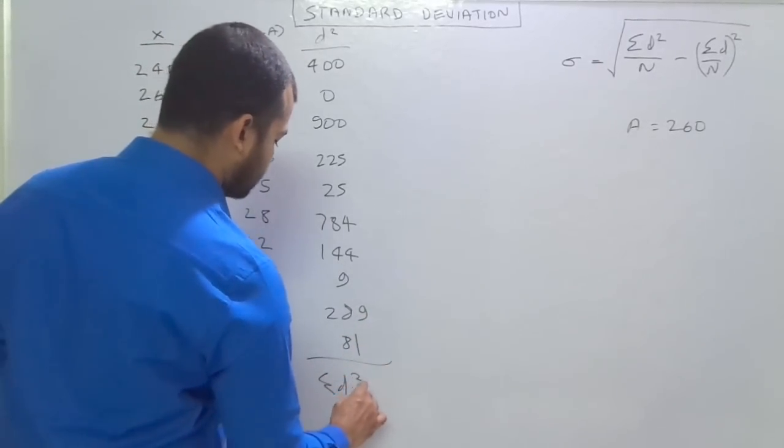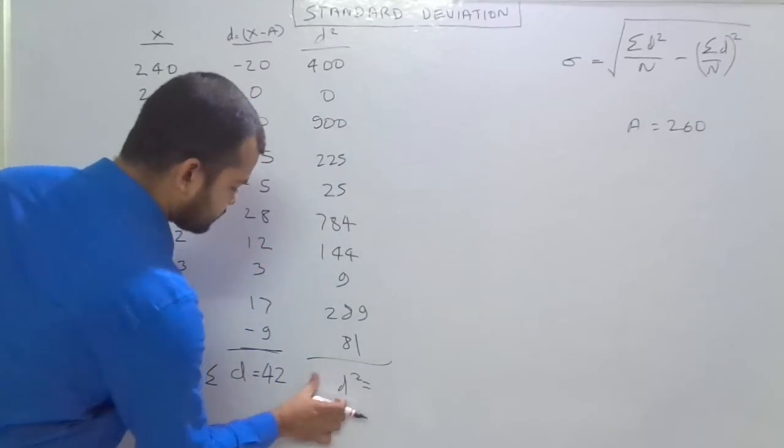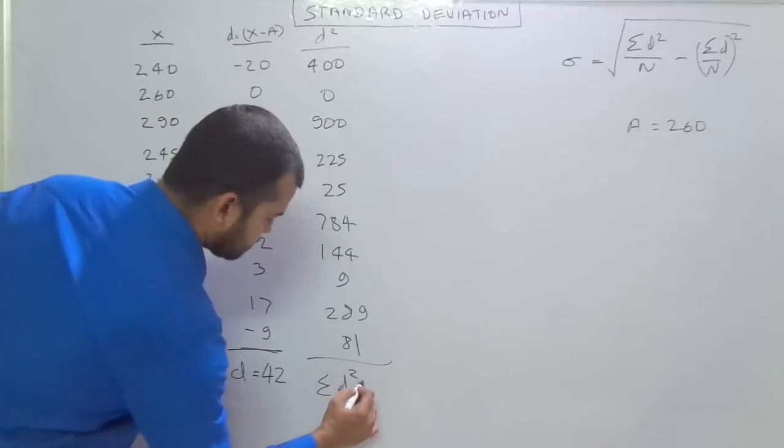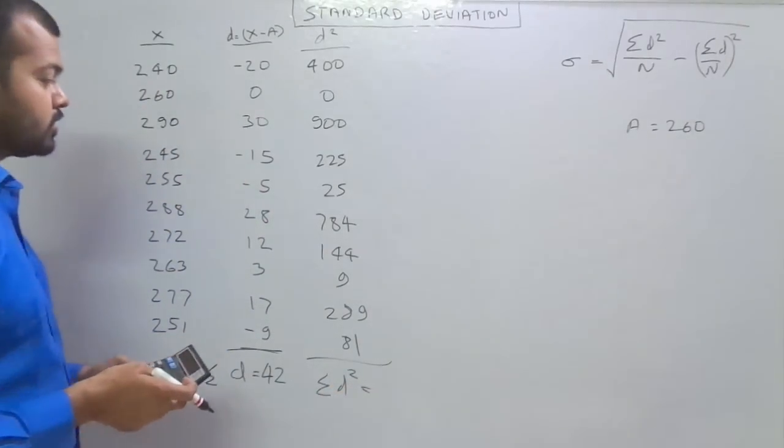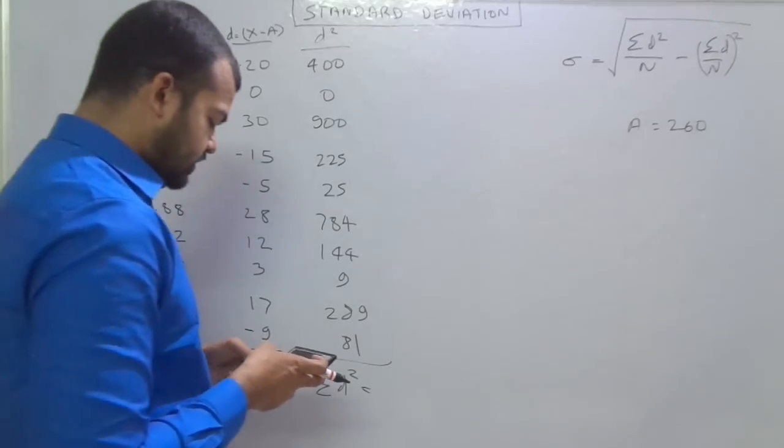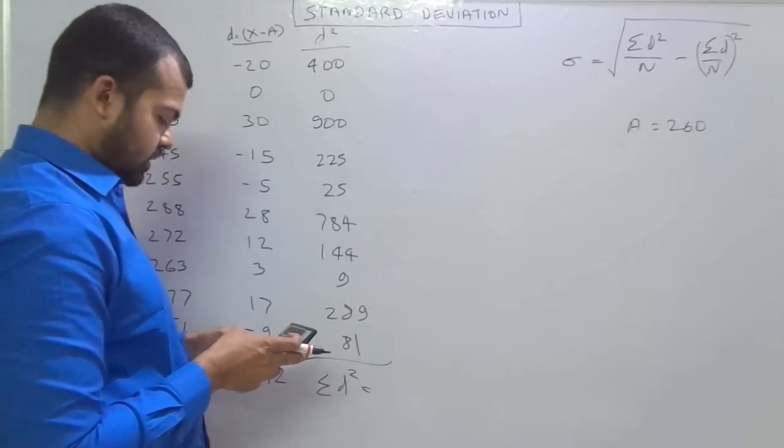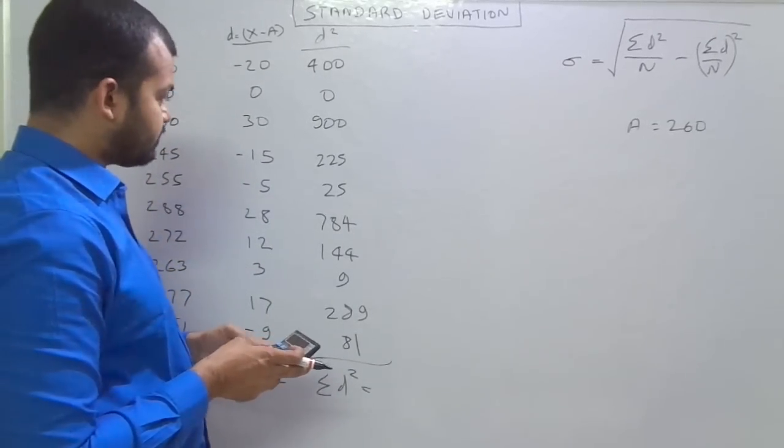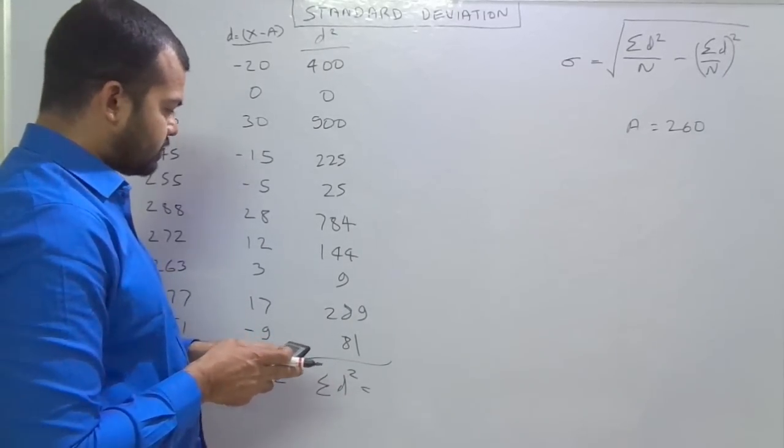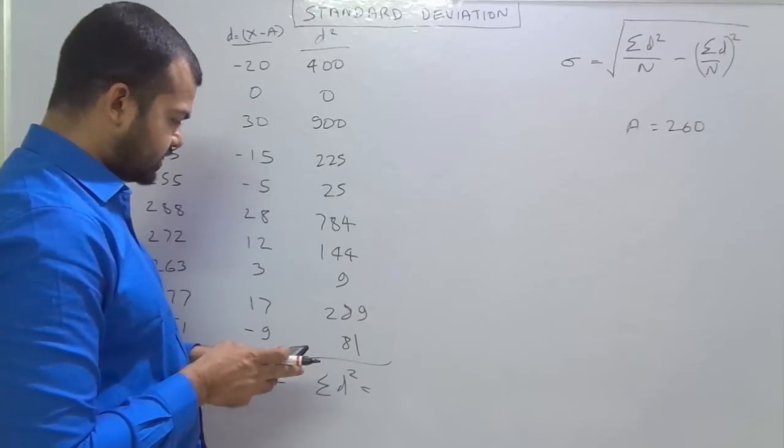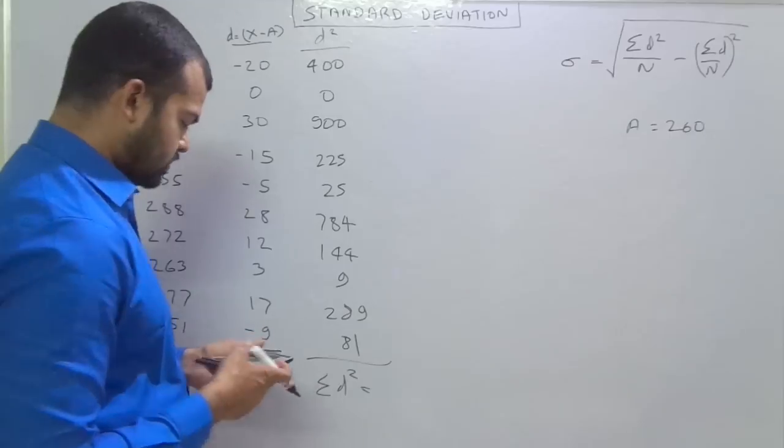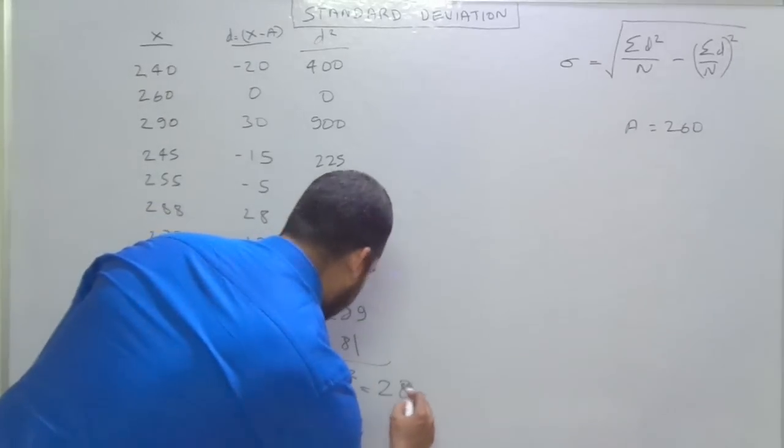So summation D square is equals to 400 plus 900 plus 225 plus 25 plus 784 plus 144 plus 9 plus 289 plus 81. That is 2857.